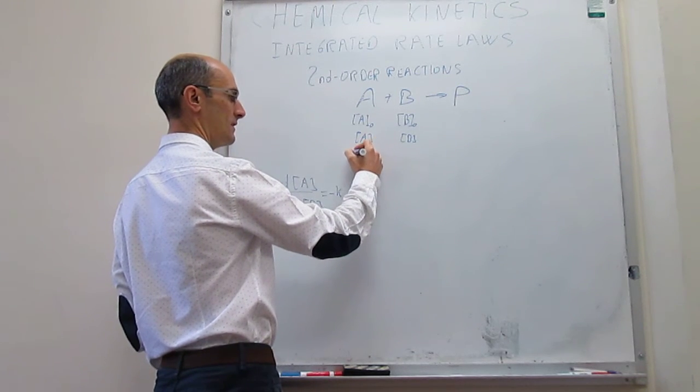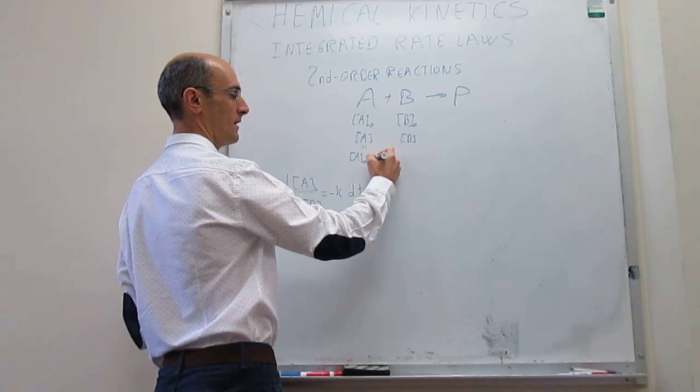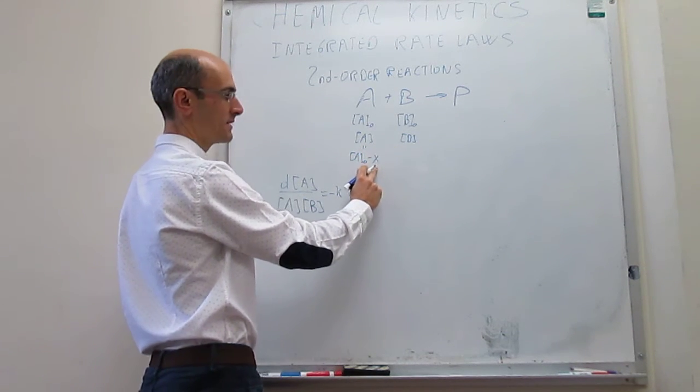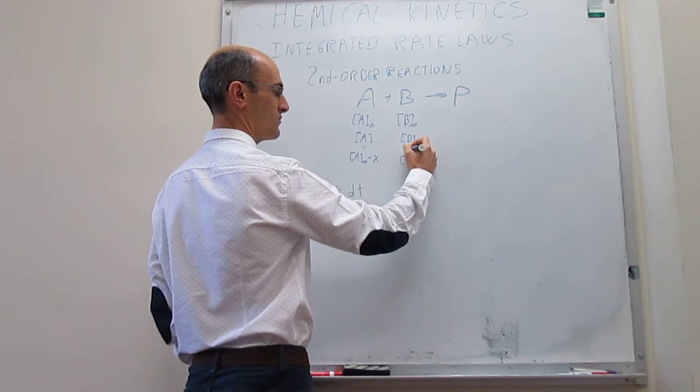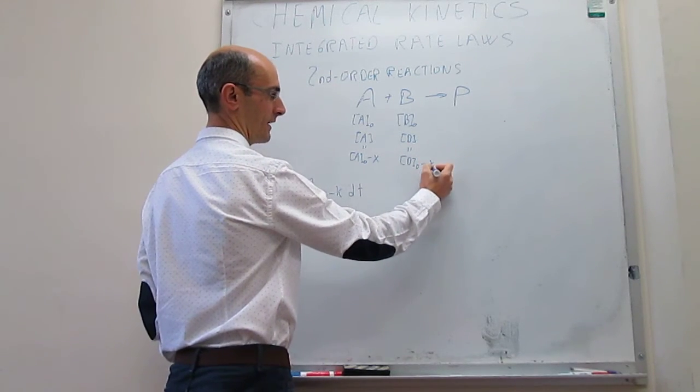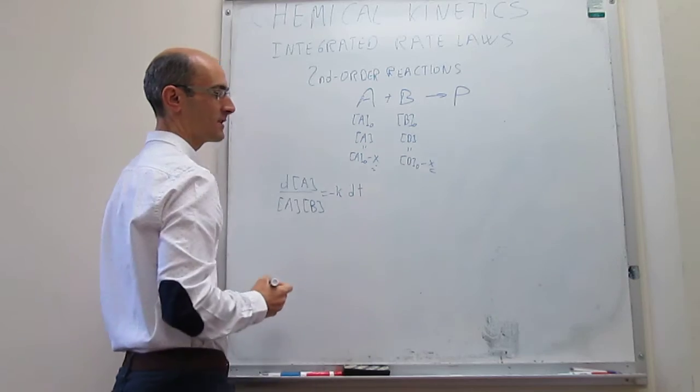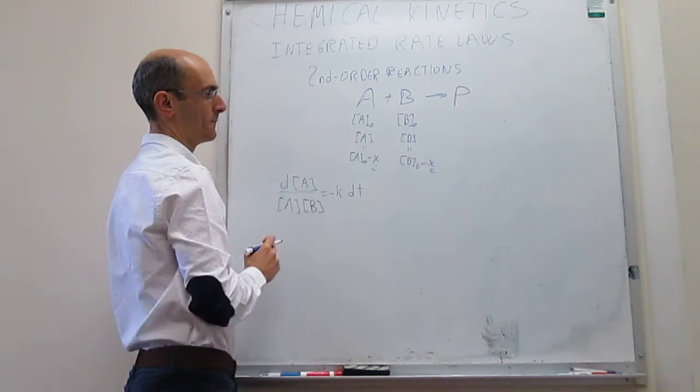So we can say that this A is the same thing as what I had initially minus the amount that has reacted X. And then I also have that my concentration of B is going to be what we had initially minus whatever has reacted. And again, the key is that this X, the amounts that have reacted are identical if the stoichiometric coefficients are 1 and 1.